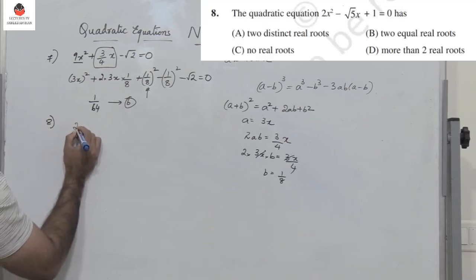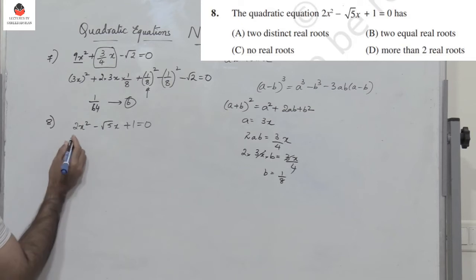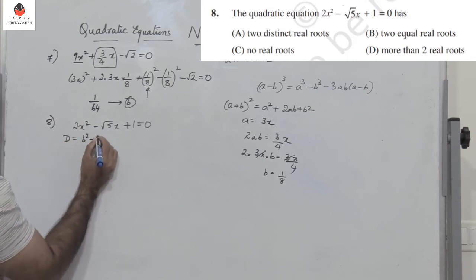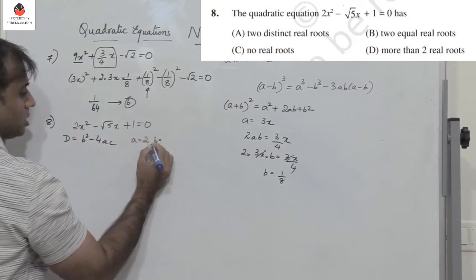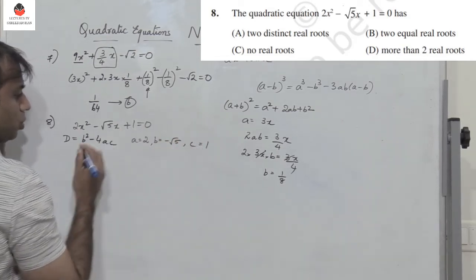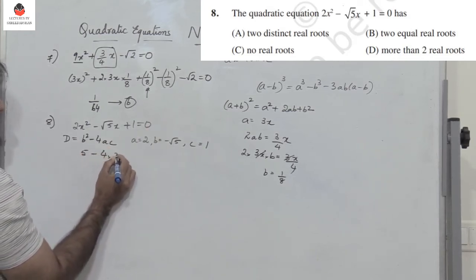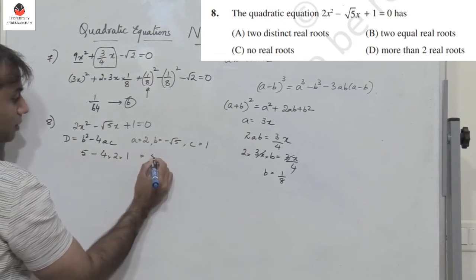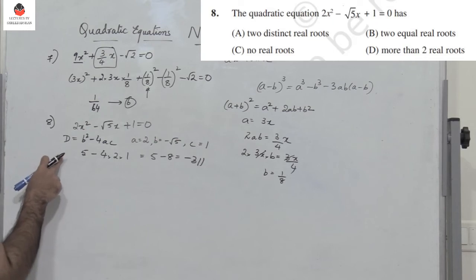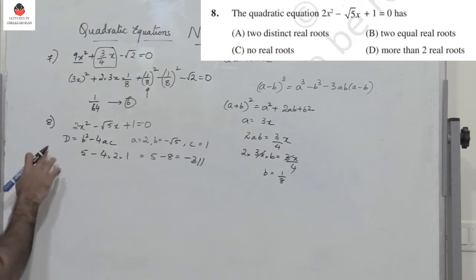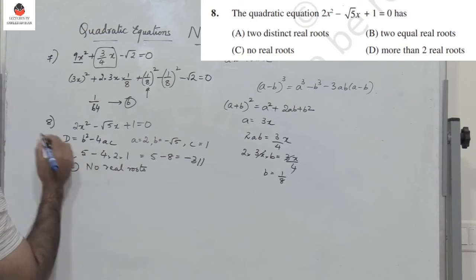Question 8: the equation 2x squared minus root 5 x plus 1 equals 0. Finding the discriminant: A equals 2, B equals minus root 5, C equals 1. B squared minus 4AC equals 5 minus 8 equals minus 3. Since the discriminant is negative, the equation has no real roots. The right option is C.